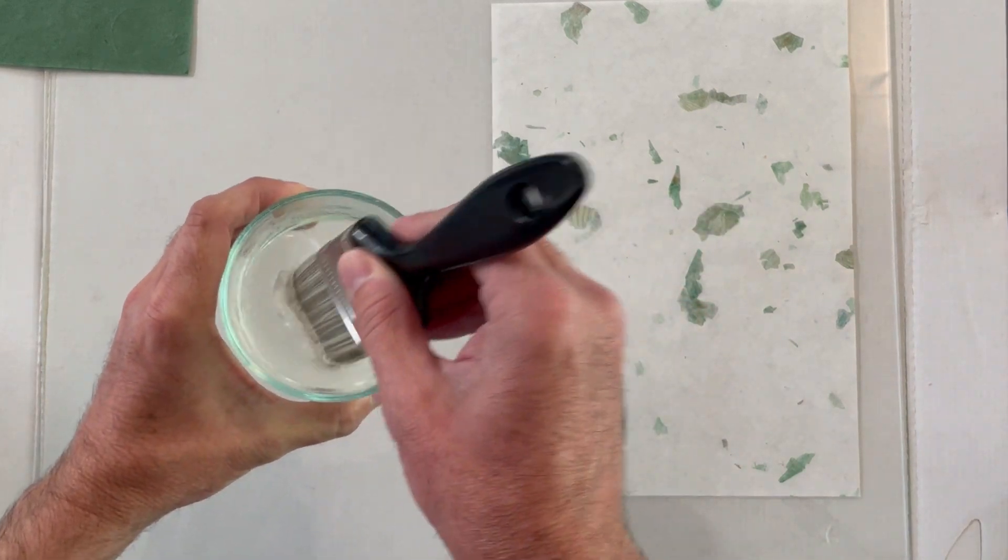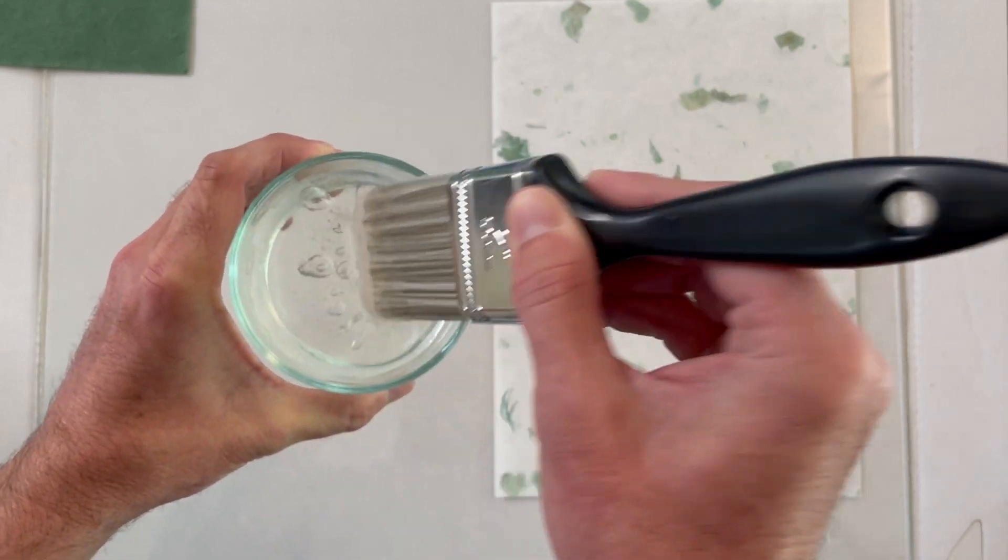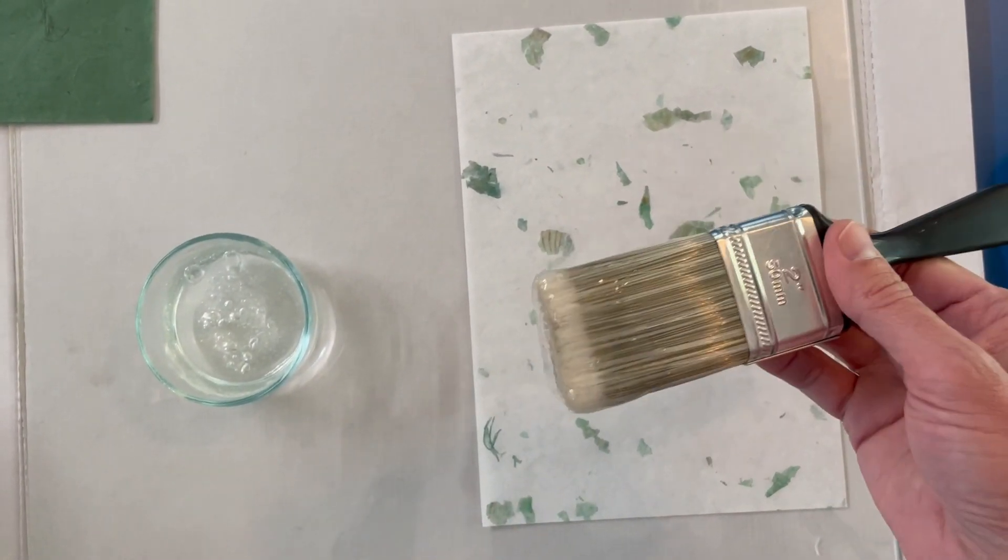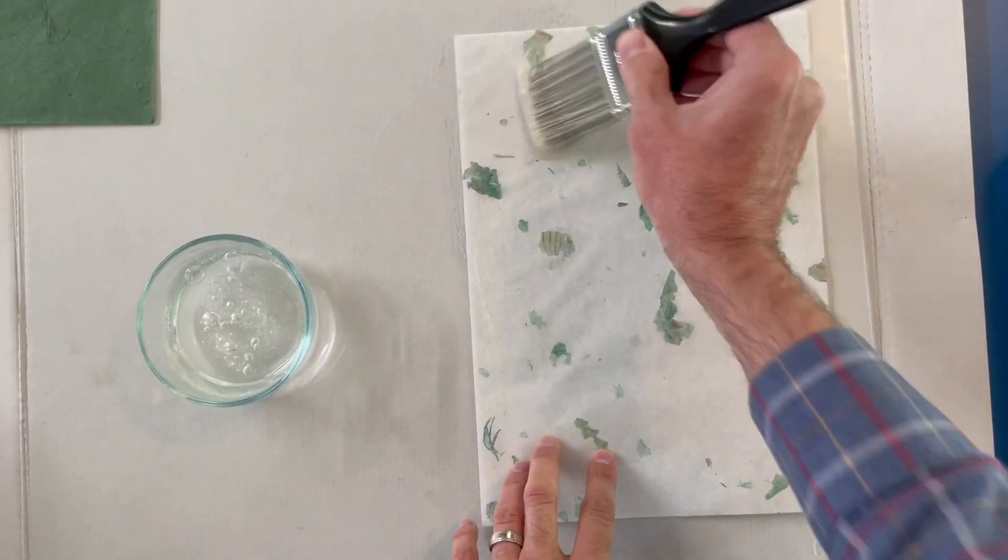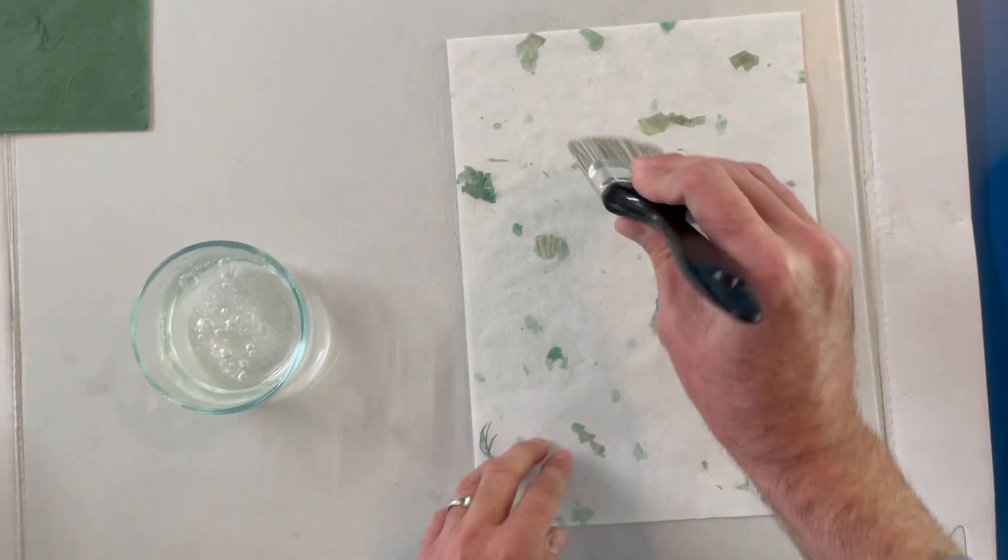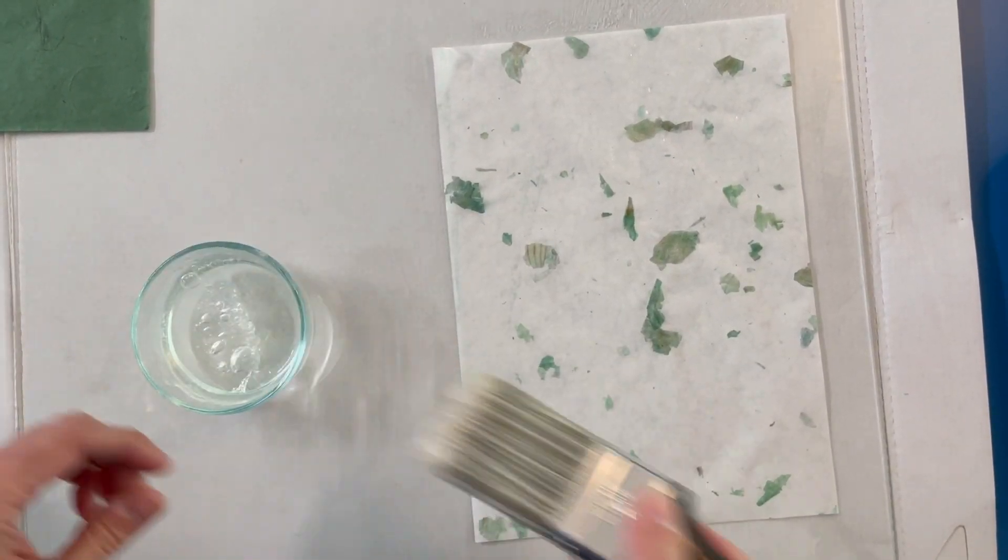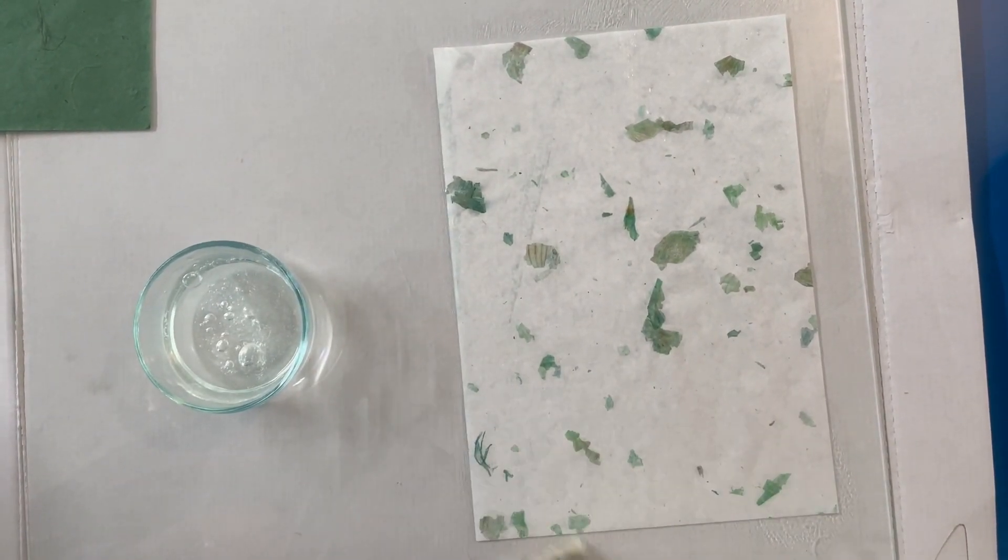I dip my brush into the methyl cellulose mixture and begin painting on a coat onto the paper. Starting kind of in the middle of the paper and working out to the edges, I thoroughly soak the paper and let it go right through all the way down to the glass.